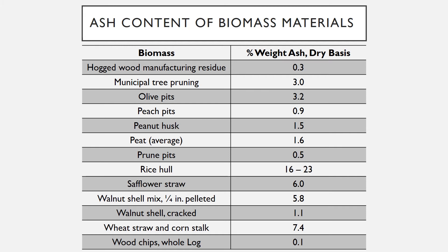Olive pits: 3.2% weight ash in dry basis. Peach pits: 0.9% weight ash in dry basis. Peanut husk: 1.5% weight ash in dry basis. Peat average: 1.6% weight ash in dry basis.